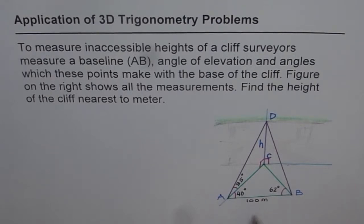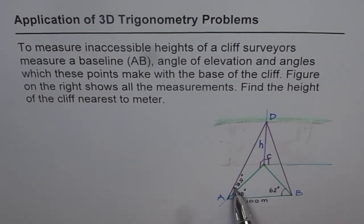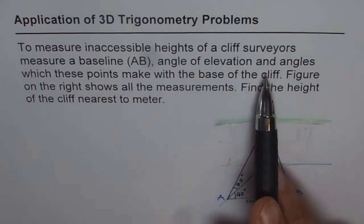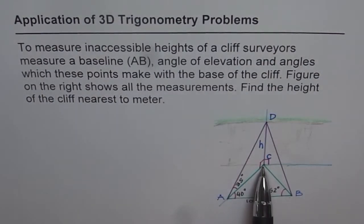To measure inaccessible heights of a cliff, surveyors measure a baseline AB which is here. Angle of elevation, so angles of elevation are angles when you are looking upwards in the vertical plane, that's 35 degrees. Angle of elevation and angles which these points make with the base of the cliff. Base of the cliff is at C. So angles with these two points made with the base of the cliff are shown here as 40 degrees and 62 degrees. Figure on the right shows all measurements. Find the height of the cliff nearest to meter. That is the question.